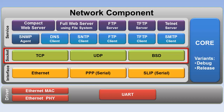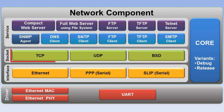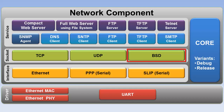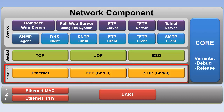The SMTP client sends out status emails using the simple mail transfer protocol. All services rely on a communication socket. TCP is a connection-oriented reliable full duplex protocol. UDP is a transaction-oriented protocol for data streaming and multicasting to a group of devices. BSD implements the Berkeley standard socket interface.